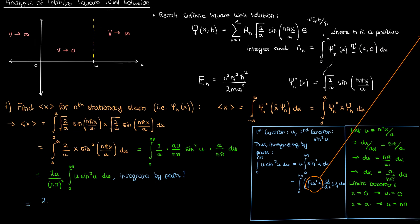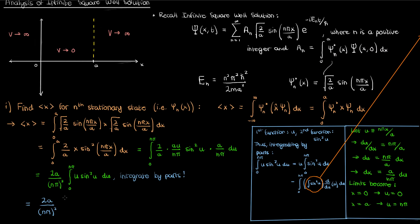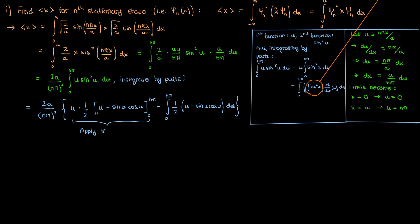Going back to the expectation value computation, I'll plug equation 1 in without the integration constant since we have a definite integral. Applying the limits on the first part of the right-hand side: for u equals 0 the term is 0, and for u equals nπ the sine term is also 0 because sine is 0 for integer multiples of π. So the first part becomes ½n²π².